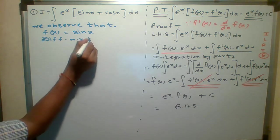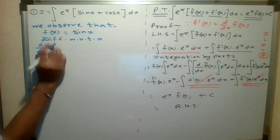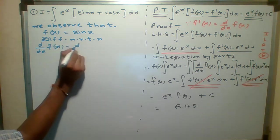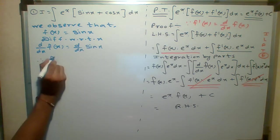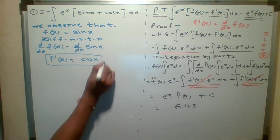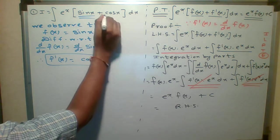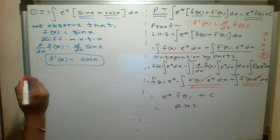So d upon dx, d by dx of f of x. And d by dx of sin x. So what is derivative of f of x? f dash of x. And derivative of sin x is cos x. So we can see, this is f of x and this is f dash of x.